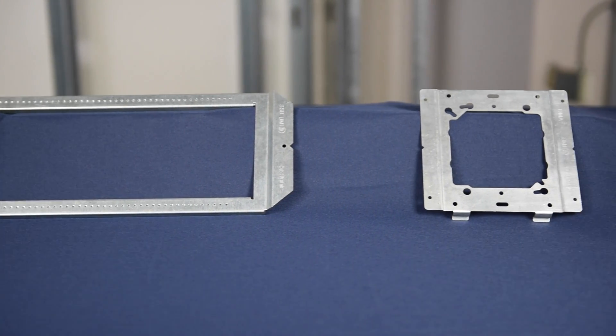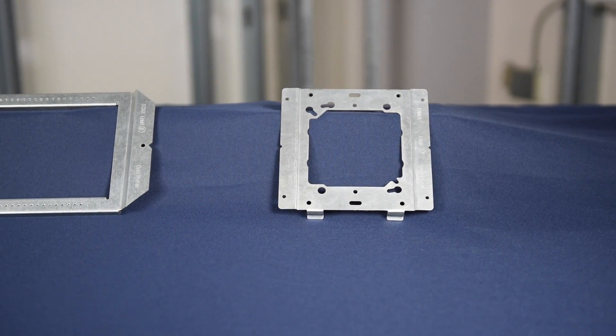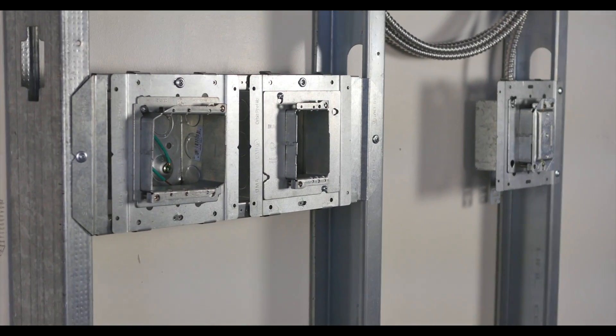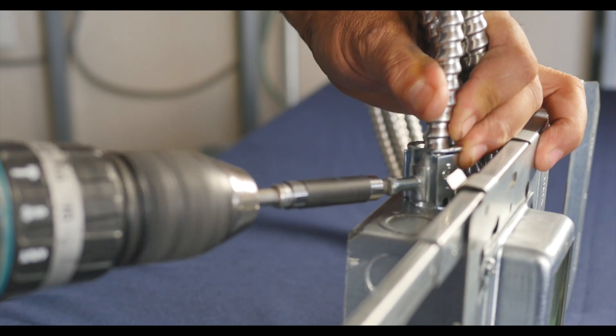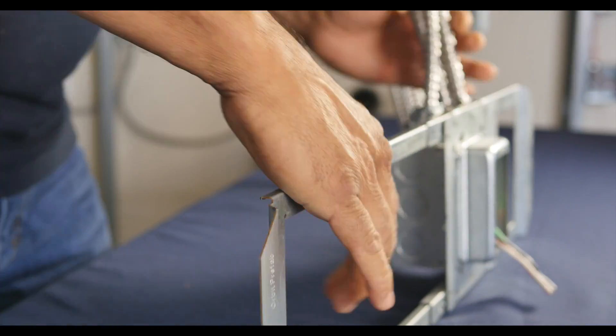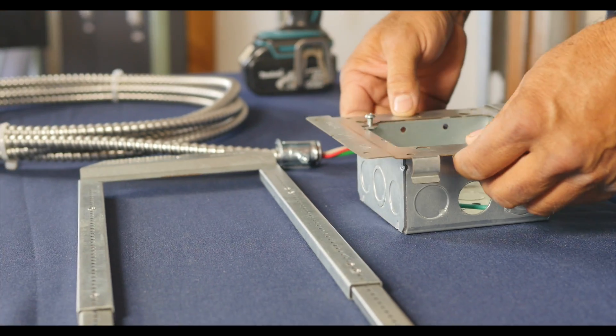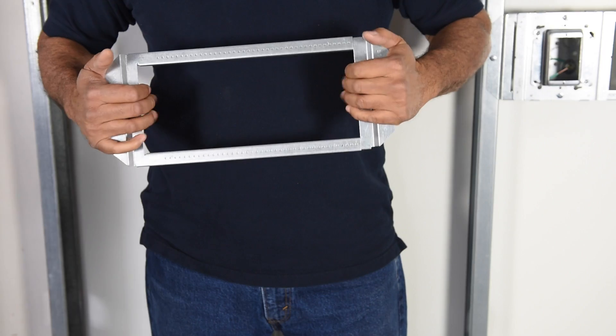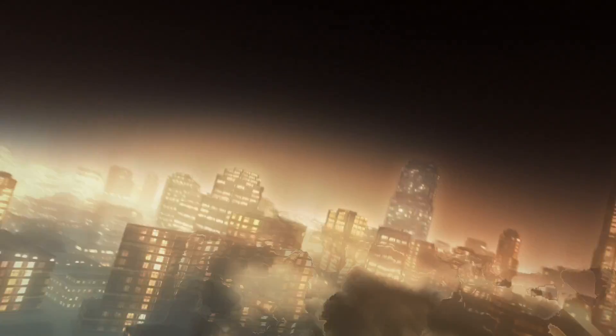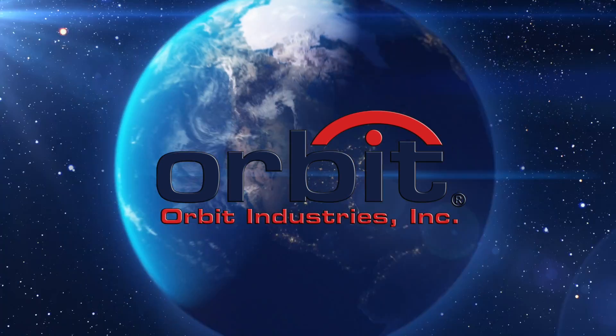The simple support bracket and universal mounting adapter provide a fast and secure way to install boxes between and directly on studs. In order to reduce installation time, Orbit is dedicated to providing innovative solutions for all your electrical needs. Orbit Industries, the ultimate source for simple solutions.